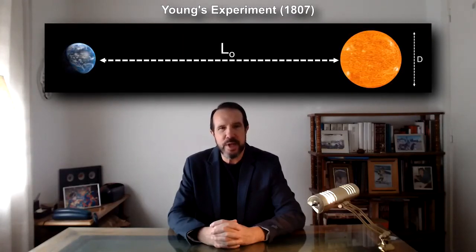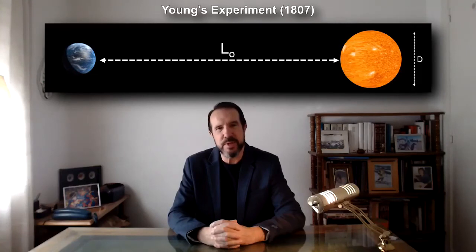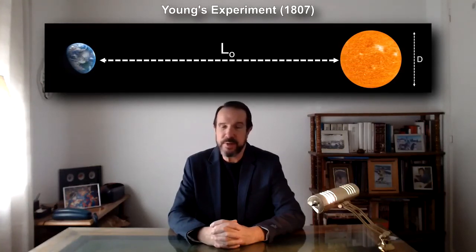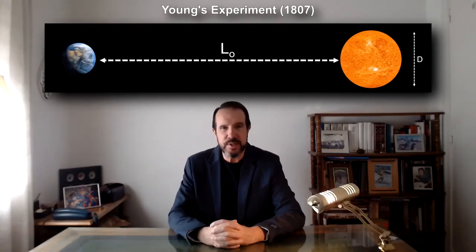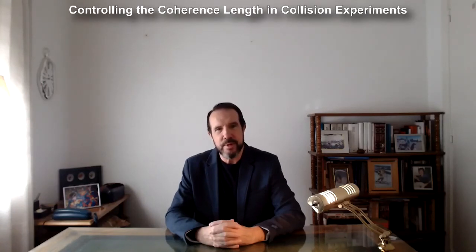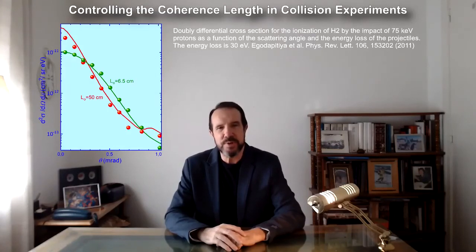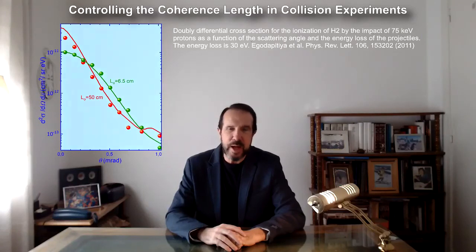First, if we rely on these results, Thomas Young could not have succeeded in his famous experiment of 1807, but inadvertently he made a modification in the conditions of the experiment which led to his success. Second, it has been usually assumed that in standard collision experiments, when reaching the target, the projectile mixed states can be represented by a single plane wave. However, by changing the experimental setup, it is now possible to manipulate the coherence length, moving between coherent and incoherent conditions.